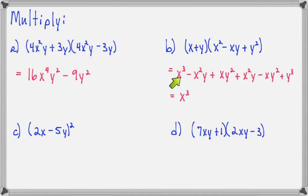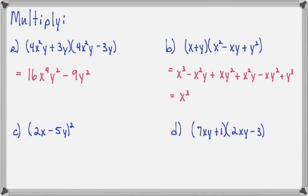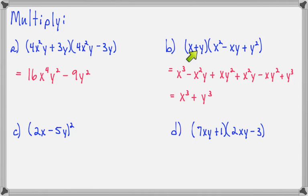Now let's combine our like terms. Negative x squared y and positive x squared y add up to 0. xy squared and negative xy squared also add up to 0, so we've lost all four of these middle terms. The only remaining term is y to the third. Isn't it interesting how you can multiply this giant problem together, and then all of these terms boil down to just this very simple answer.